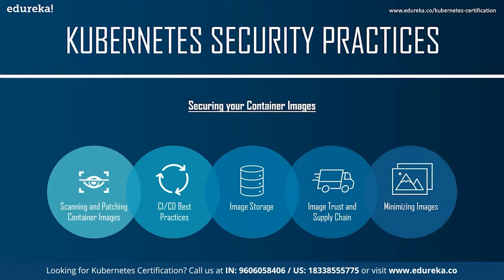To ensure you're not running vulnerable code, scan both third-party container images and those built by your own organization. New vulnerabilities continue to be found in existing software, so rescan images regularly. Once you've identified a container image that includes a vulnerable package, update the container to use a fixed version. Don't be tempted to SSH into running containers and run yum update or apt-get update — this is an anti-pattern that becomes unfeasible when running hundreds of thousands of instances across a cluster.